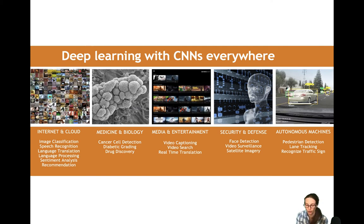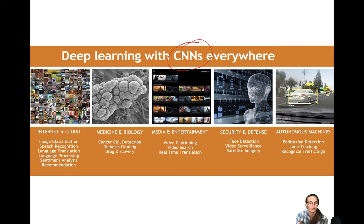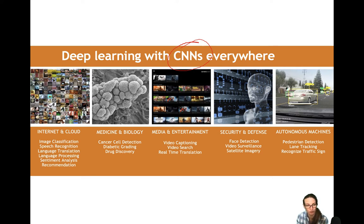Deep learning with convolutional neural networks — CNNs — is really everywhere. Much of the information on the Internet is being used and labeled to enable all sorts of models for speech recognition, image classification, etc. It is also possible to leverage 1D convolutional neural networks for speech and text representations, which Professor Janja will talk to you about. I'll talk a little bit about speech, but he'll cover how to represent words with 1D convolution.